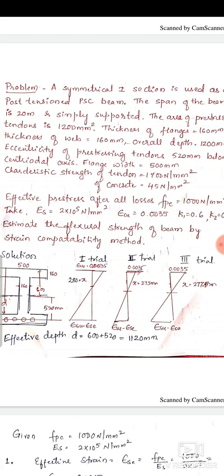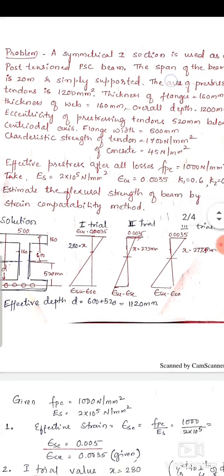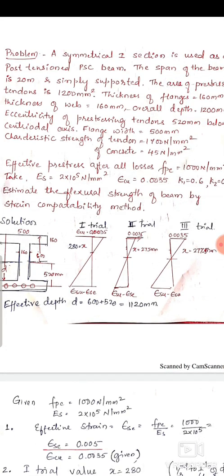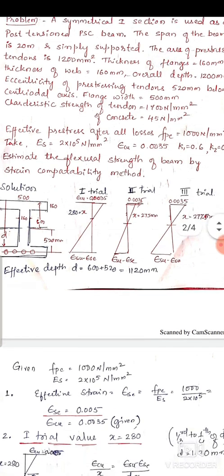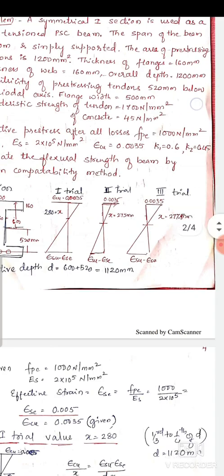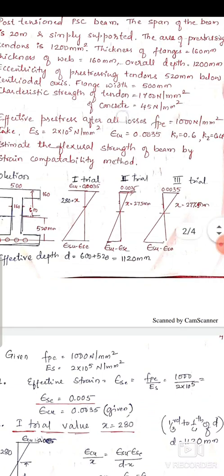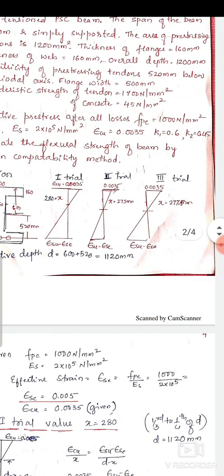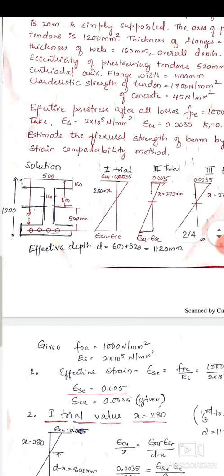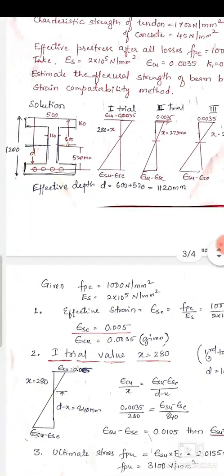The beam is simply supported with a span of 20 meters. The given data: area of tendons = 1200 mm², flange thickness = 160 mm, overall depth = 1200 mm, eccentricity = 520 mm, flange width = 500 mm, tensile strength = 1700 N/mm², cube strength of concrete f_ck = 45 N/mm², effective pre-stress f_pe = 1000 N/mm², Young's modulus of steel, ultimate compressive strain ε_cu, and stress block coefficients k1 = 0.6 and k2 = 0.45.